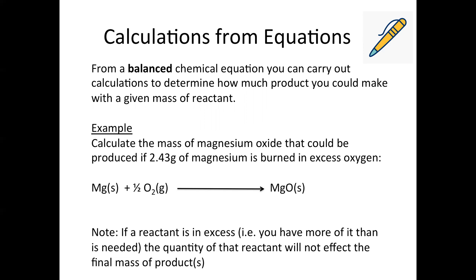Any calculation in chemistry is going to deal with moles in some respect, though it'll look slightly different depending on how you choose to do the calculation. An example you might come across is the reaction between magnesium and oxygen — the combustion of magnesium. You're asked to calculate the mass of magnesium oxide that could be produced if 2.43 grams of magnesium is burned in excess oxygen.